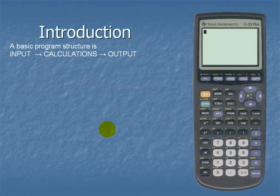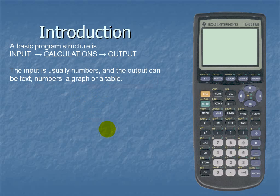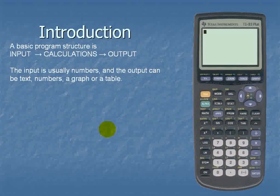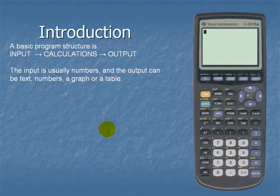A basic program structure is input, calculations, and output. The input is usually numbers, and the output can be text, numbers, a graph, or a table.